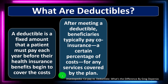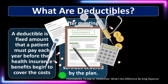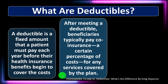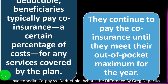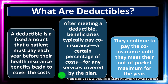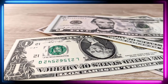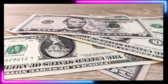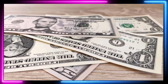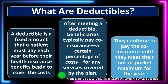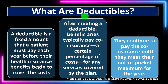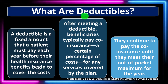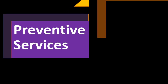After meeting a deductible, the beneficiary typically pays co-insurance — a certain percentage of costs for any services covered by the plan. So it's more complicated with medical insurance because after you go over the deductible you could still have a co-insurance situation, meaning you're paying a percentage after that point. They continue to pay co-insurance until they meet their out-of-pocket maximum for the year — that's the upper limit.